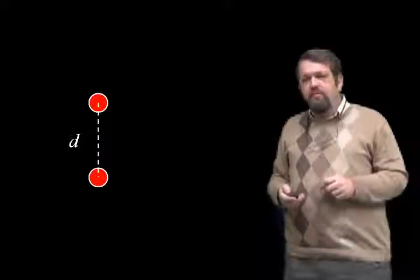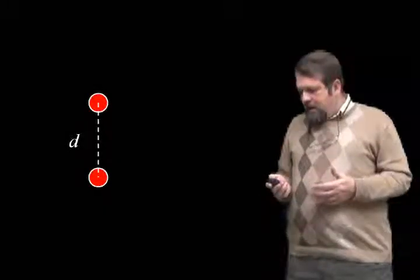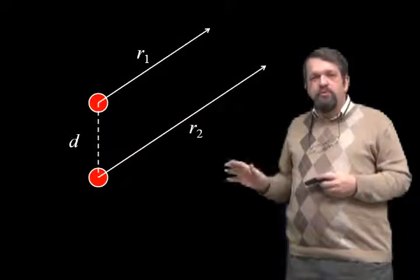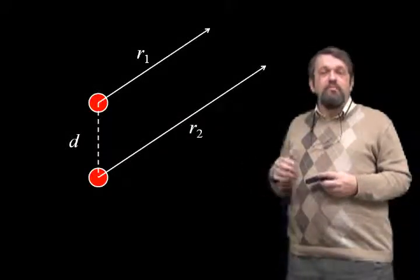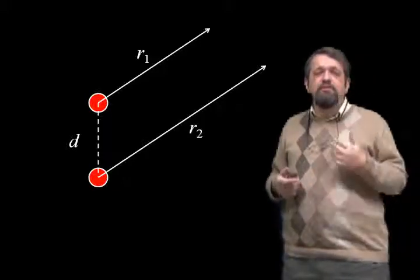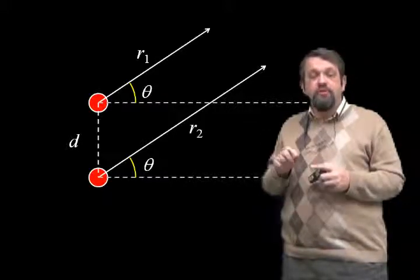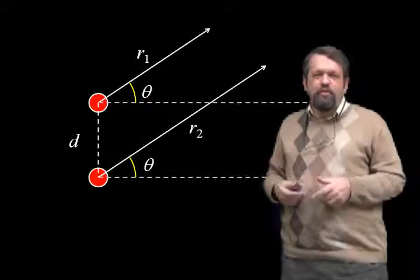Now, this lets us write the conditions for constructive and destructive interference in a nice way. Let's assume that the two sources of waves are actually pretty close together compared to the distance to the constructive or destructive interference that we're considering. So we have two sources separated by a distance d. Since they're close together, the two lines to the point we're considering — the distances R1 and R2 — basically go along parallel lines. They form the same angle theta with respect to the horizontal, the distance perpendicular to the separation of the two sources.